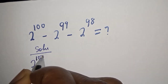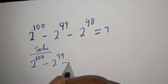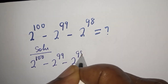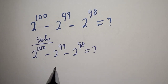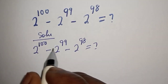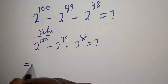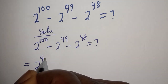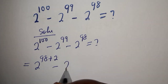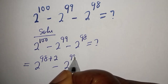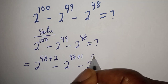2 raised to power 100 minus 2 raised to power 99 minus 2 raised to power 98 is what we want to find. Then 2 raised to power 100 can be written as 2 raised to power 98 plus 2, minus 2 raised to power 99 can be written as 2 raised to power 98 plus 1, minus 2 raised to power 98.